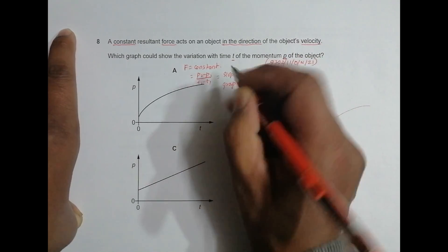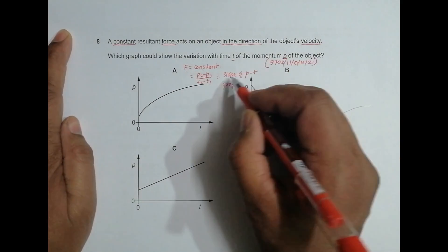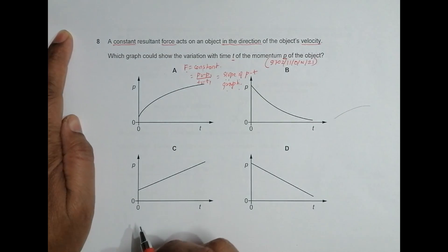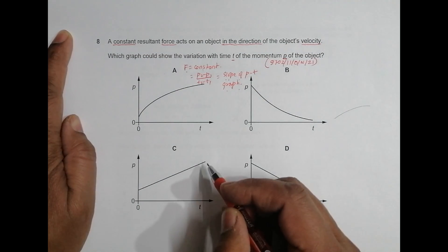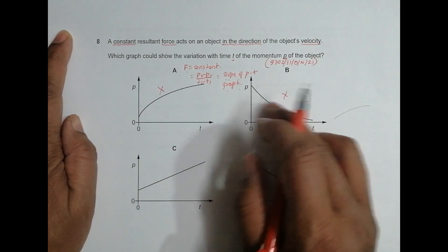So if I have got F equal to constant, then slope of p-t graph should be constant. So if that logic comes here, then this thing and this thing disqualifies because the slopes change, but these don't disqualify because their slopes are constant.